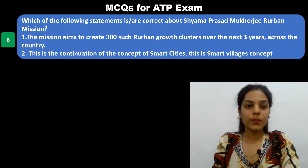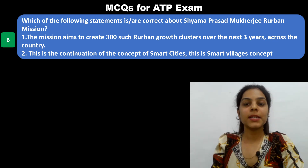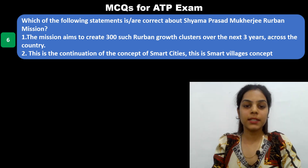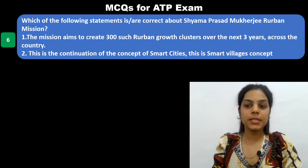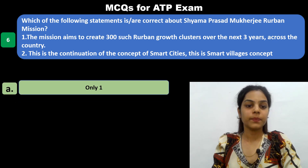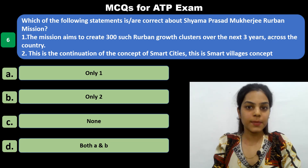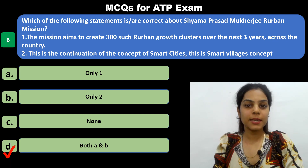The next question has the same format but different statements about Shama Prasad Mukherjee Re-Urban Mission. Statement one: The mission aims to create 300 such urban growth clusters over the next three years across the country. Statement two: This is a continuation of the concept of smart cities — this is the smart villages concept. The answer is both statements are correct.